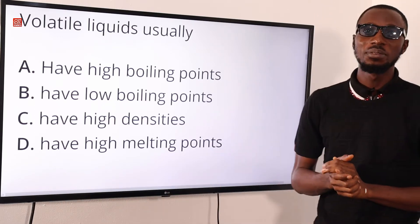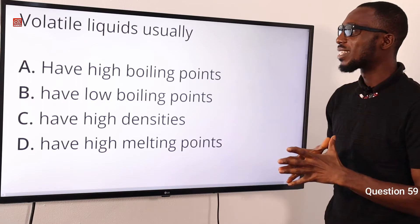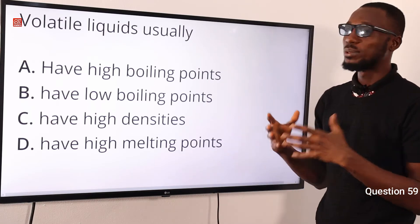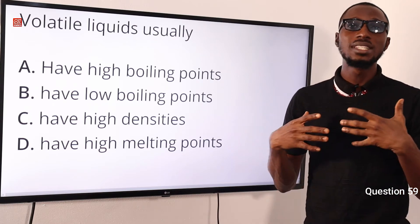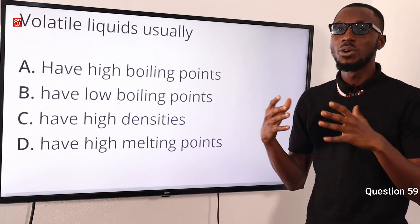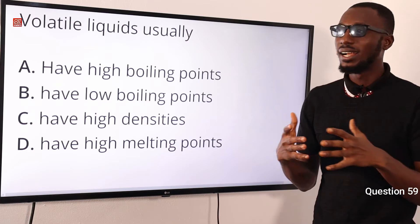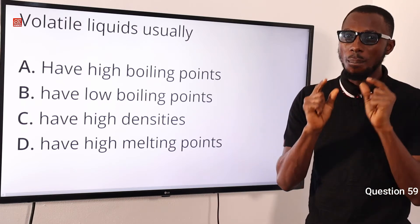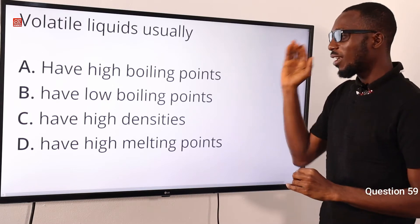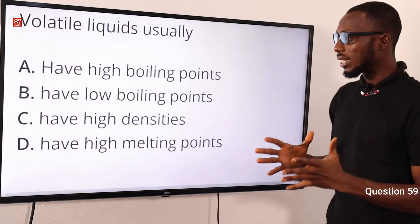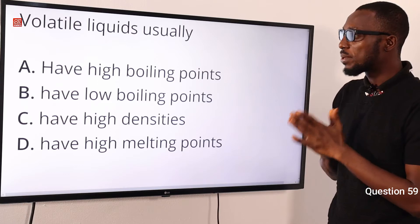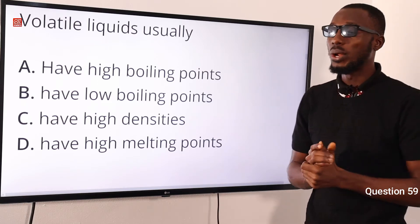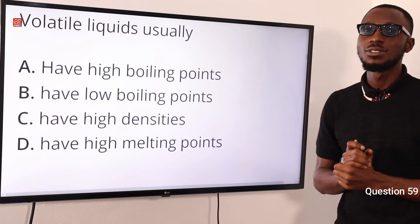Question 59: Volatile liquids usually do what? Volatile liquids evaporate readily. They have weak intermolecular forces, high vapor pressure, and low boiling points. Based on what we just described, option B is correct — volatile liquids usually have low boiling points.